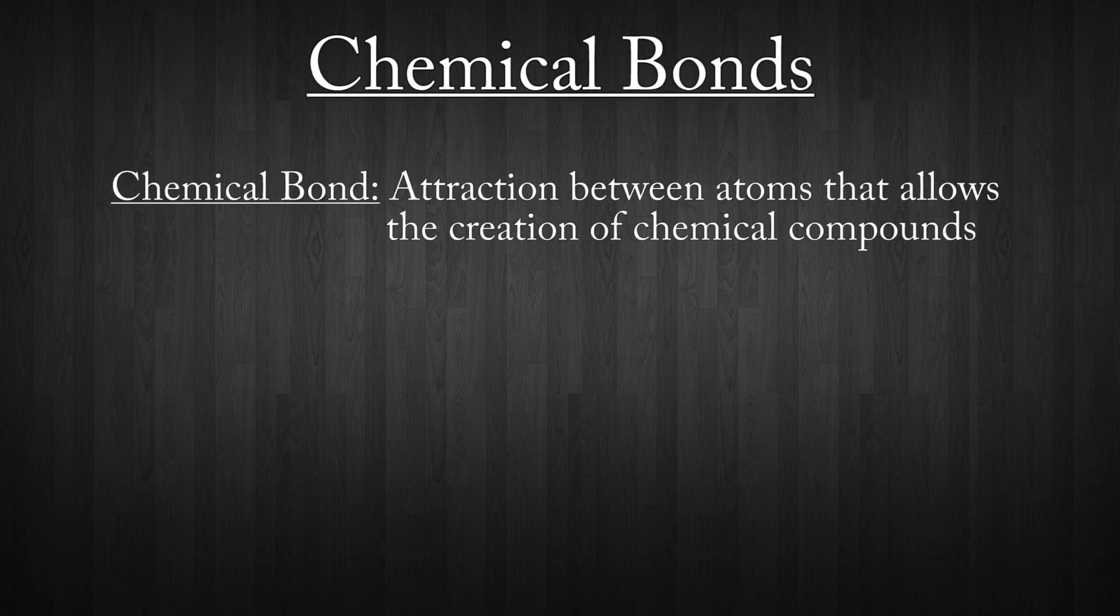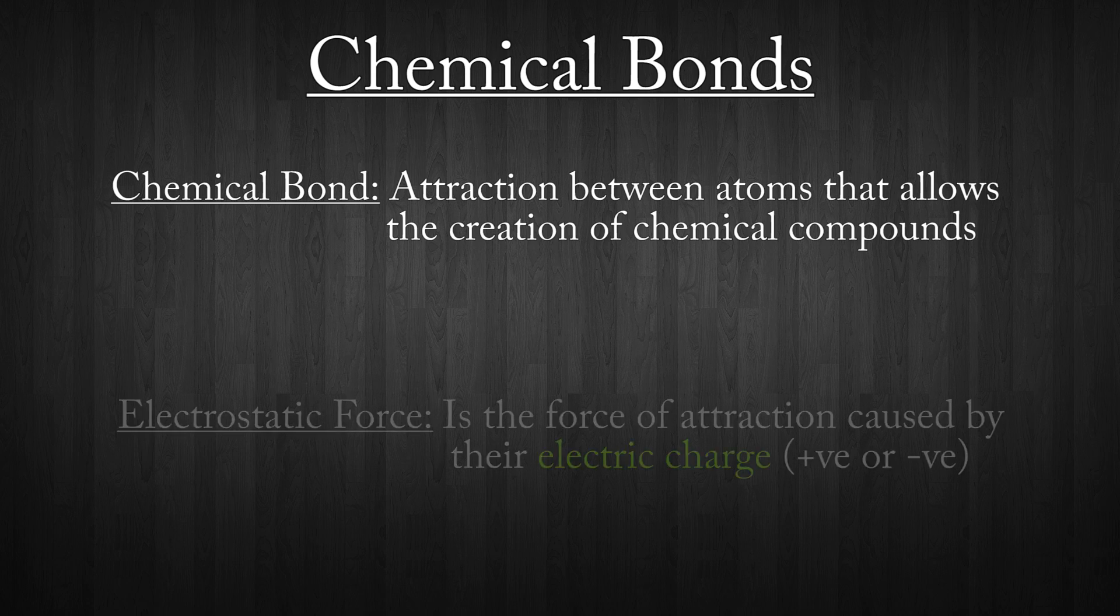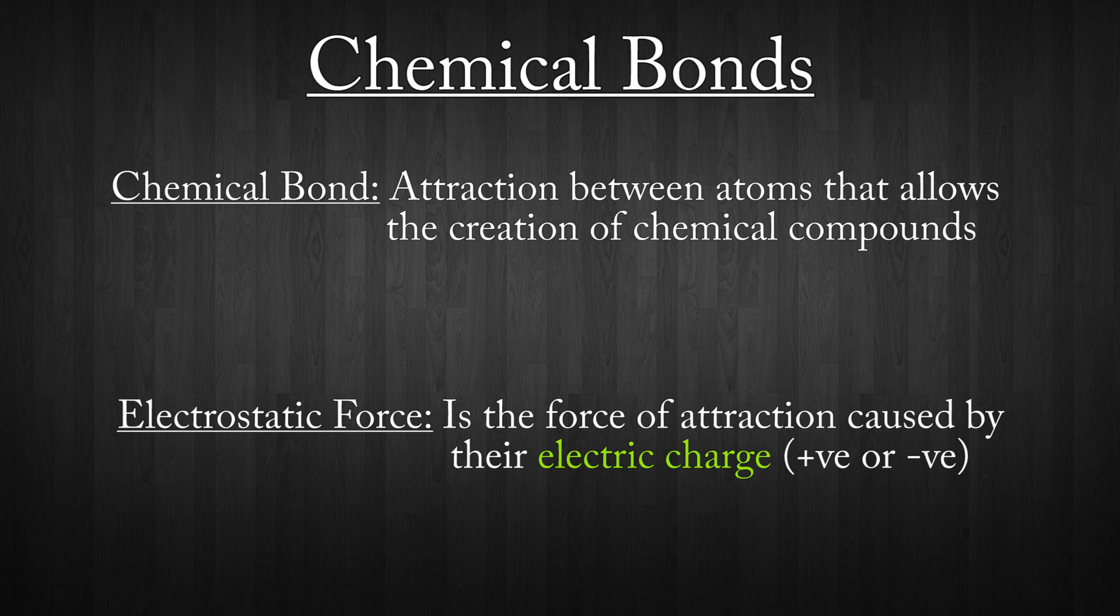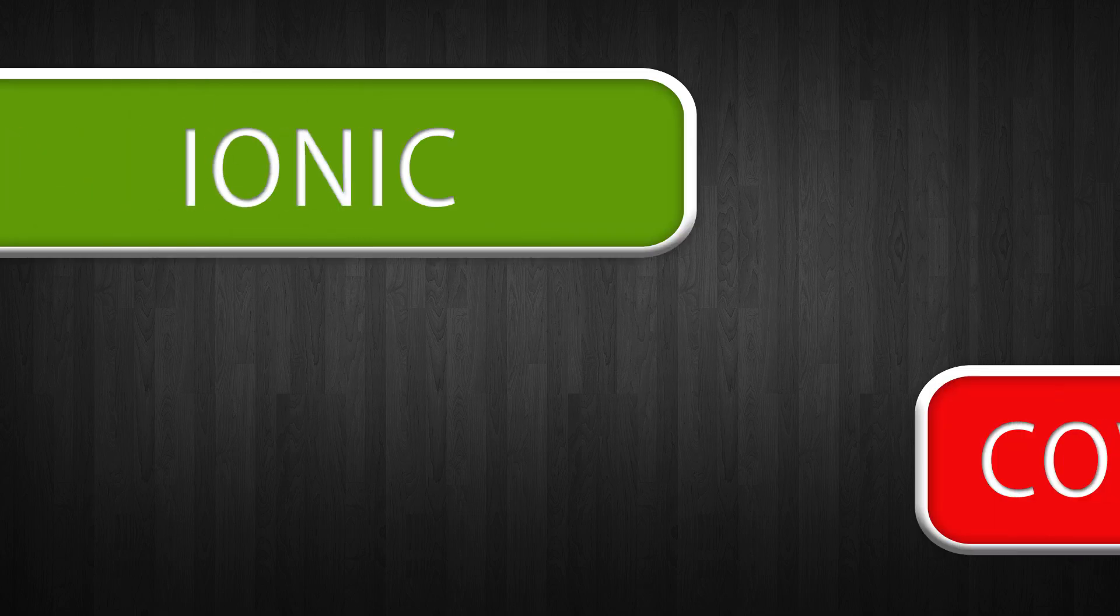A chemical bond in its simplest form is the attraction between atoms that allows the creation of compounds. These chemical bonds are a result of a force called electrostatic force. This means that atoms with opposite charges will attract to each other, forming an overall more stable compound. The main types of chemical bonds are ionic bonds and covalent bonds.